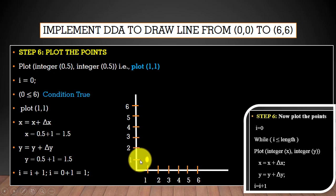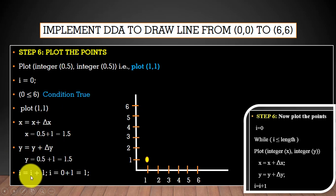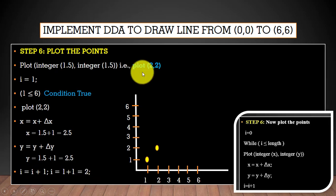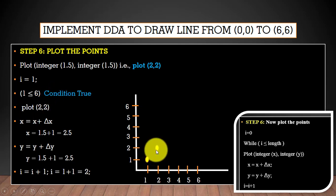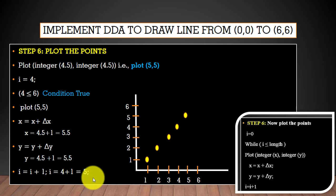Now we find the next points to continue generating the line. We update x: the previous x was 0.5, Delta X is 1, so new x = 1.5. Similarly, y = 0.5 + 1 = 1.5. We increment i to 1. The condition i ≤ length is true, so we plot point (2, 2). We continue updating x, y, and incrementing i, plotting each rounded point until the condition becomes false.